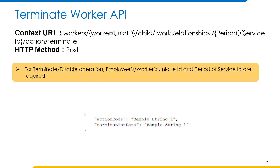The next one is TerminateWorker API. This API is used to disable a worker record. The HTTP method used for this is POST. For the terminate or disable operation, the employee's or worker's unique ID and period of service ID are required. The example request body includes action code and termination date.